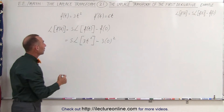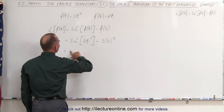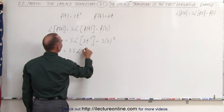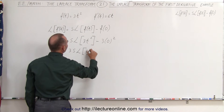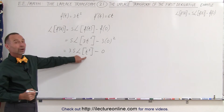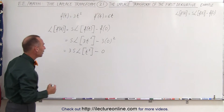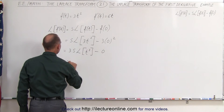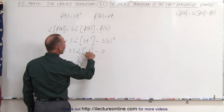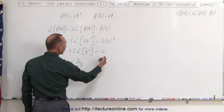Now simplifying that, we get the following. This is equal to s times — let me first factor out a 3 — so this becomes 3 times s times the Laplace transform of t squared minus 0. What is the Laplace transform of t squared? Well that would be 2 over s to the third power, which is 2 factorial divided by s to the 2 plus 1.